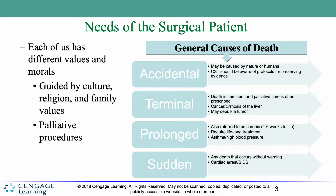The second cause is terminal. This is when death is imminent, and typically we provide something called palliative care. Palliative care is not meant to cure or heal the individual — it's designed to make them more comfortable at end of life. Examples could be cancer or cirrhosis of the liver. We may do something in surgery like debulking a tumor, removing part of a tumor.